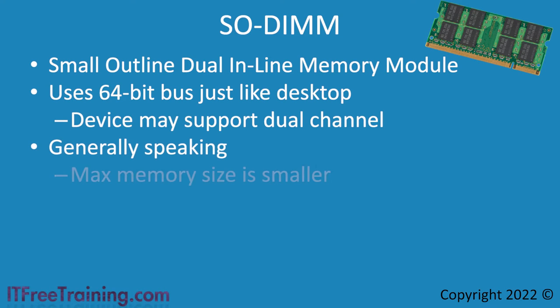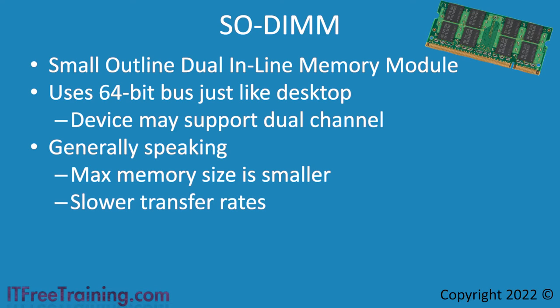Generally speaking, the max memory of SODIMM will be smaller than the DDR equivalent, which makes sense since they are smaller in size. However, nowadays the largest SODIMM are very large. For example, it is possible to get a SODIMM DDR4 memory module that is 16GB in size. SODIMM generally have slower transfer rates, and while the bus width is the same, some SODIMM can have very high clock rates, so it really depends on which one you buy.